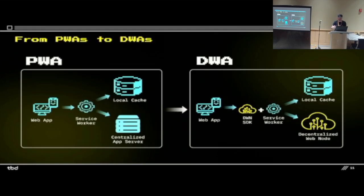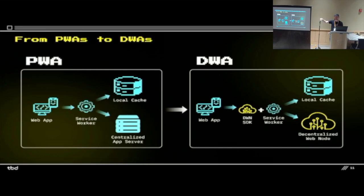So what is a DWA? It's a bit of a shift. We're shimming in some code with the Service Worker — instead of a PWA's normal route, which is a website that talks only to its own centralized server and caches that server's routes and assets — we're inserting the DWN SDK in front of that, so that your data is effectively stored with you in your DWN. It just looks like a PWA, but we're making the cache more based off your personal data store, not a centralized server.